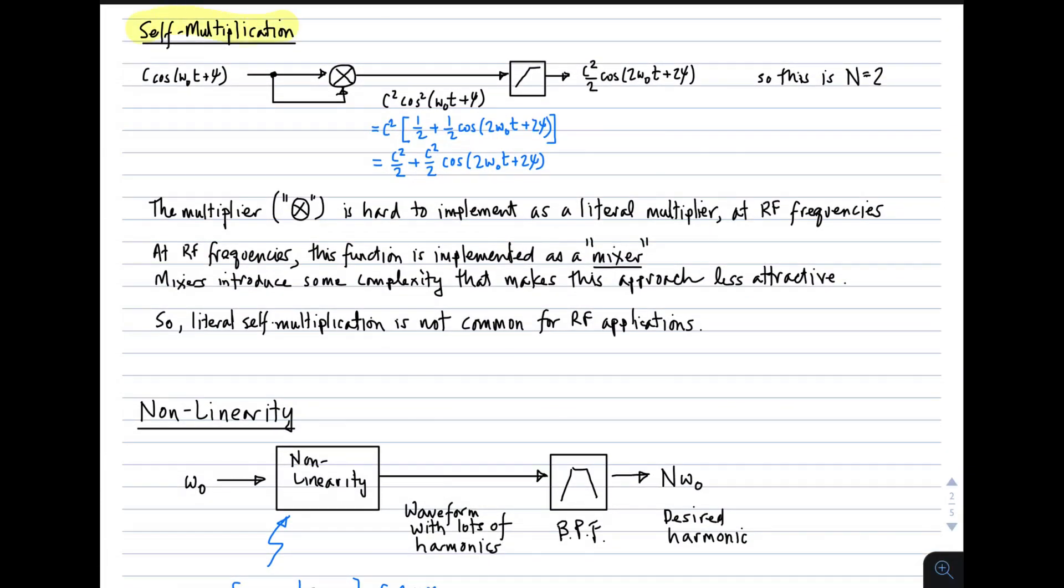Okay, so first, self-multiplication. Imagine some sinusoid, c times cosine omega-0t plus some phase. We simply make a copy of it, apply it to this thing, which is a multiplier, and if you multiply a signal by itself, you just square it. So this is c squared cosine squared of the argument. We can use a trig identity to replace cosine squared with something in terms of cosine of a different argument. In this case, just multiply it by 2. We expand that out, and we get this. So this is a DC term plus something which is at twice the original frequency. So if we filter away the DC term, then we're left with just this thing, which is at twice the frequency. So that's an n equal 2 frequency multiplication operation.